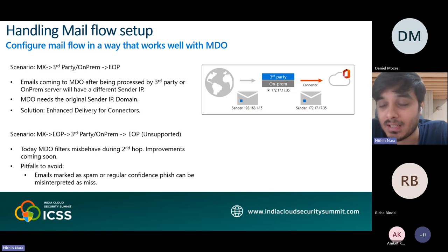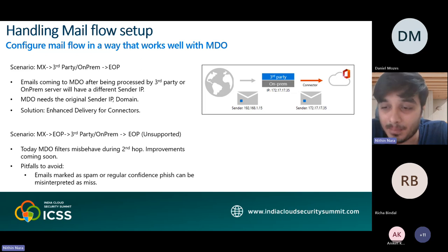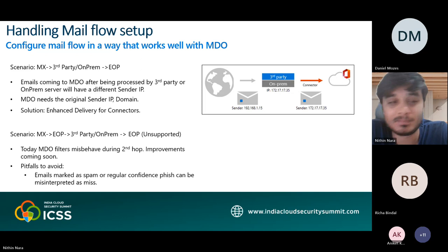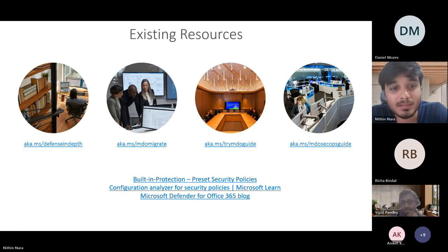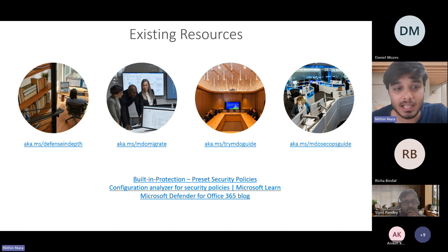You can leverage the reporting on the MDO side to get a better picture of what verdict we are giving to an email. Just because an email goes to the third party doesn't mean MDO has marked it as good — it could have marked it as spam or regular phish depending on your policy action. There are a whole bunch of resources and documentation in this area, including a defense-in-depth section. With that, I'll hand over to Vipul to kick off our next area on phishing simulation and training.